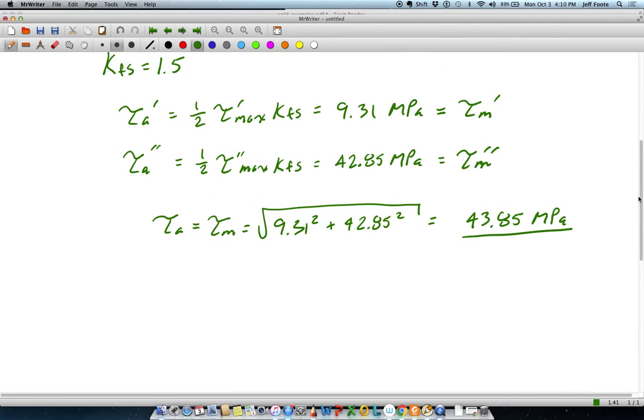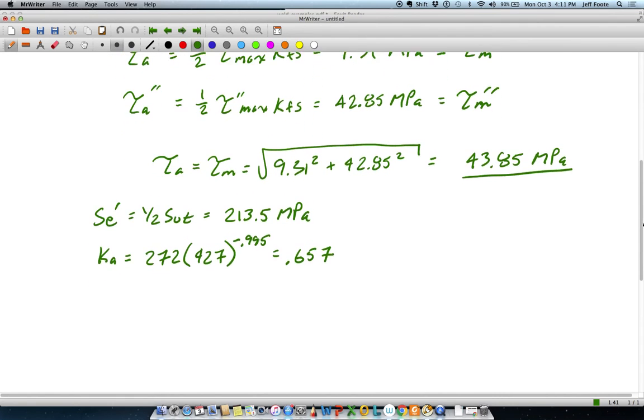We also need an endurance limit for this. And this is calculated in the traditional Marin factor way with KA through KE. And starting off with an unmodified shear stress of 1.5 SUT. So 1.5 of 427 is 213.5. KA for welds, we're going to use the as forged condition. Which looks like this. That gives 0.657, so significant reduction just from the surface finish.